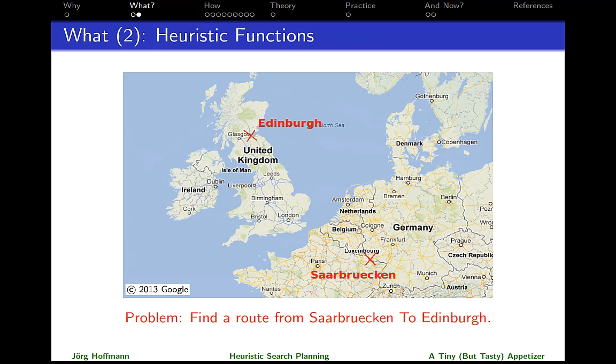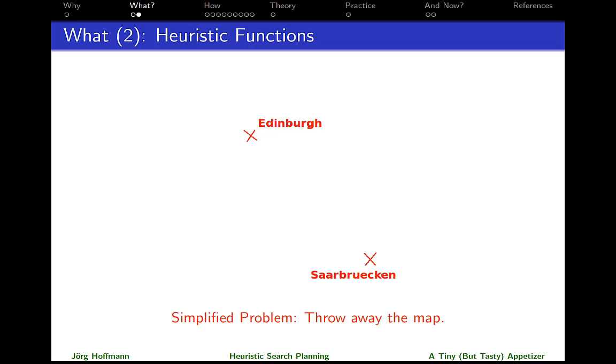Here's the standard example illustrating the standard approach. Let's say our problem is to find a route from Saarbrücken to Edinburgh. What we do is we simplify the problem. In this case here, we might choose to simplify it by just throwing away the map. Now what we do is we solve the simpler problem in order to get our estimate, which in this case here will be the straight-line distance. So heuristic functions are computed as the solutions to simplified versions of the problem you're interested in.